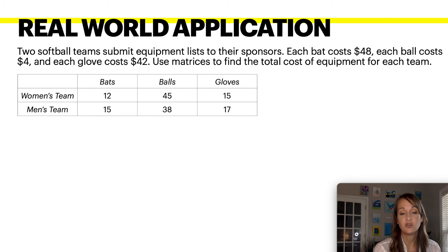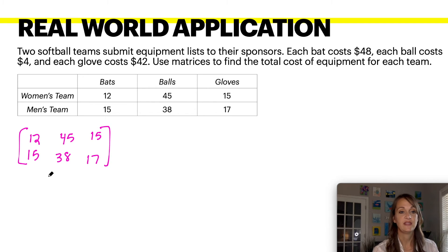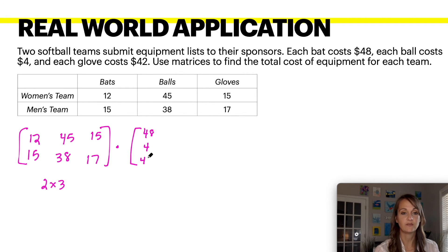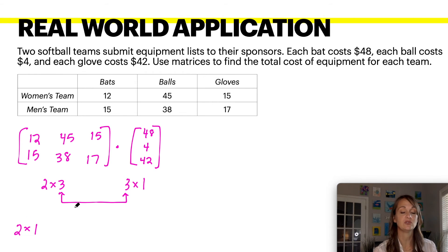A real world application: two softball teams submit equipment lists to their sponsors. Each bat costs $48, each ball costs $4, and each glove costs $42. The equipment list — 12 bats and 15 bats, 45 balls and 38 balls, 15 gloves and 17 gloves — forms a two by three matrix. We're going to multiply that by the cost matrix: $48, $4, and $42 arranged as a three by one column, because the dimensions must line up in the middle. The resulting dimension will be a two by one — one value for the women's team and one for the men's team.